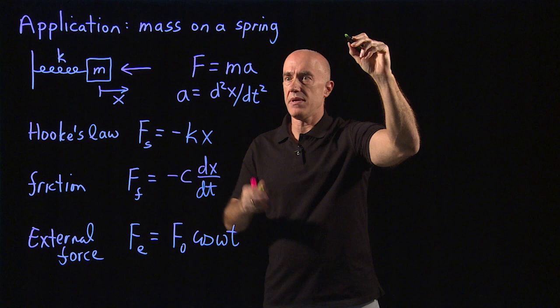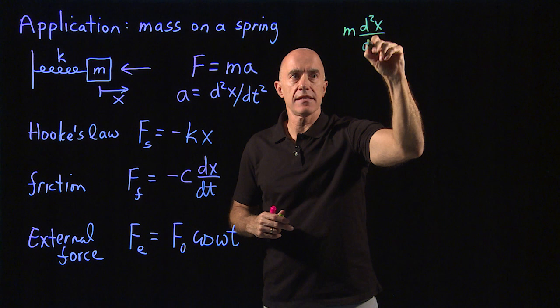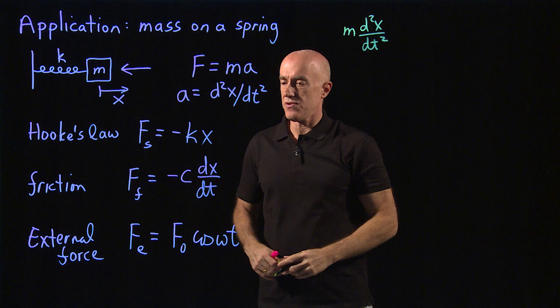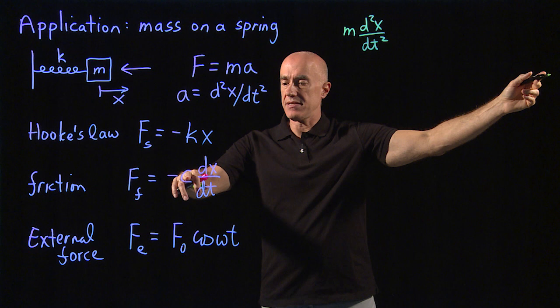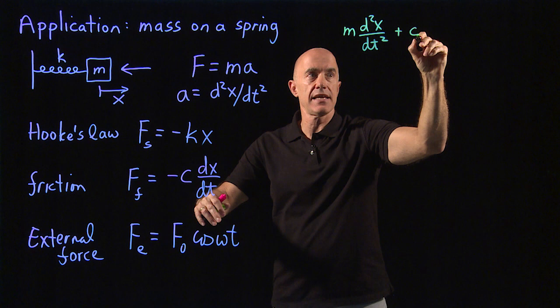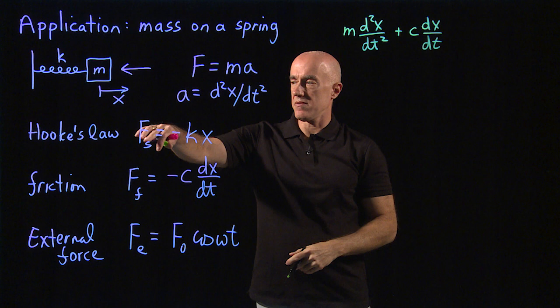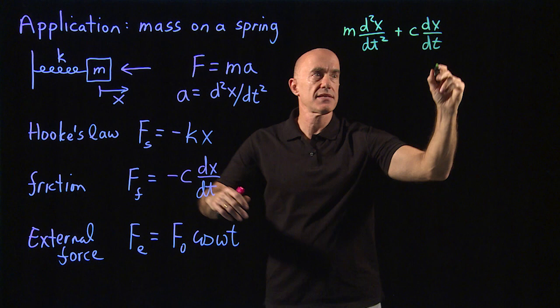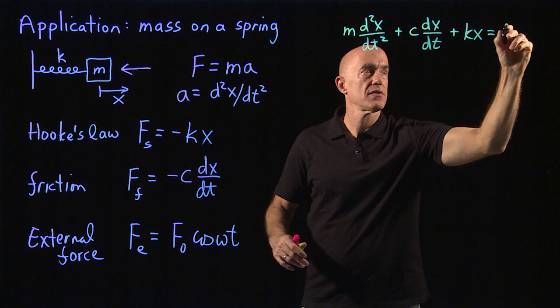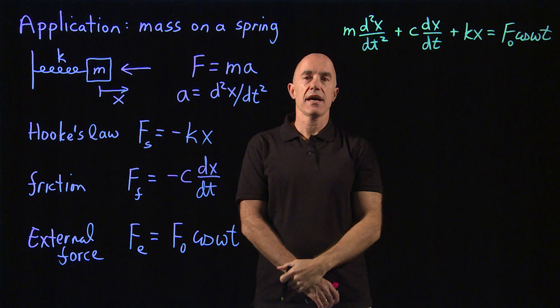So the governing equation here is going to be m d squared x dt squared. That's the ma. And then pull the forces onto the left-hand side. We have the frictional force was minus c dx dt on the right. We pull it to the left, so it becomes plus c dx dt plus the restoring, minus the restoring force, so it becomes plus kx equals the driving force, which is F naught cosine omega t.